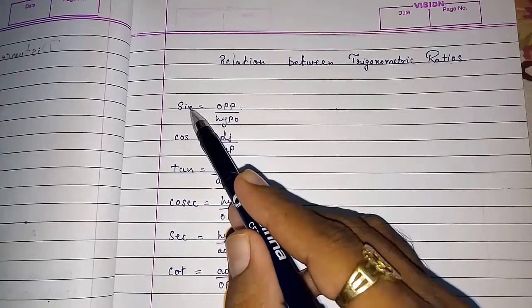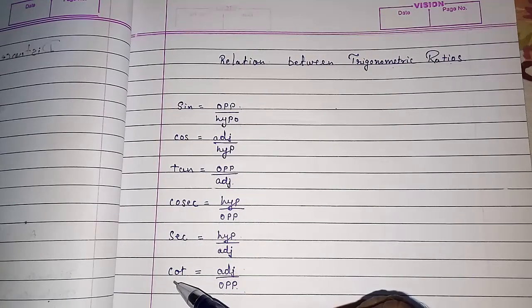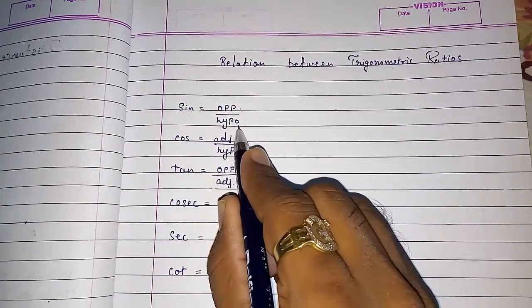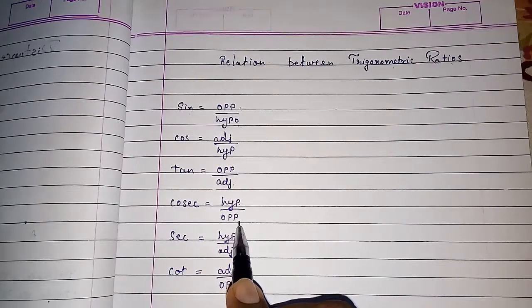Now I am going to tell you about the relationship between these all six angles. Look here how we are going to, sin is opposite by hypotenuse and look here cosec is hypotenuse by opposite.